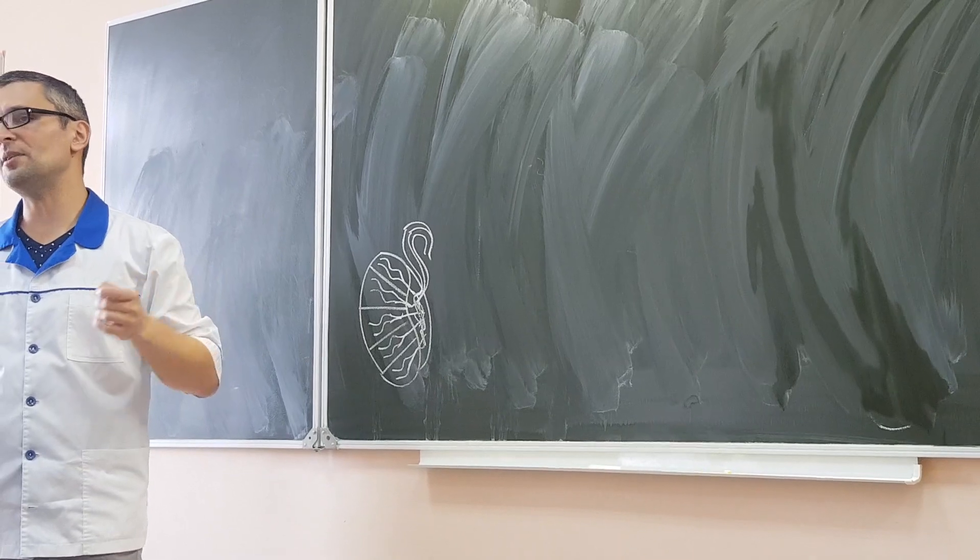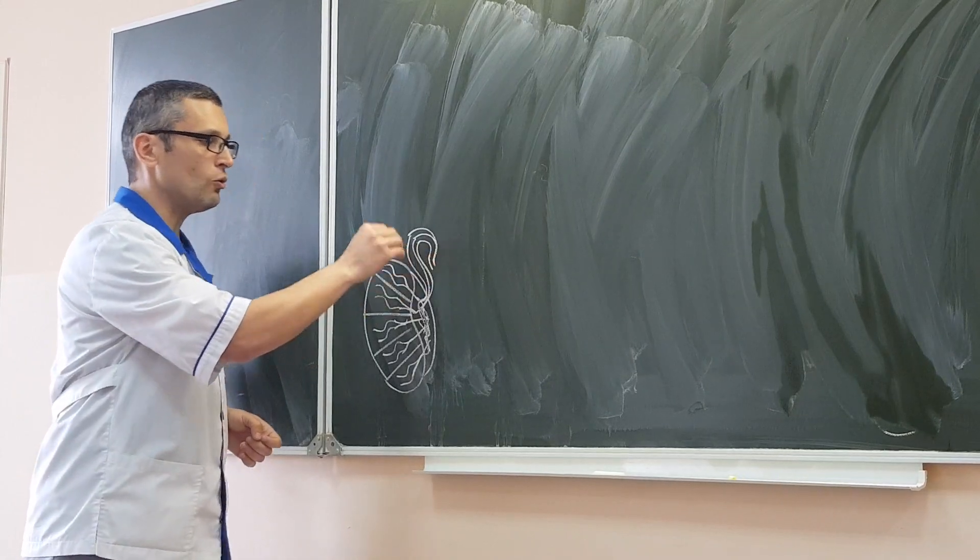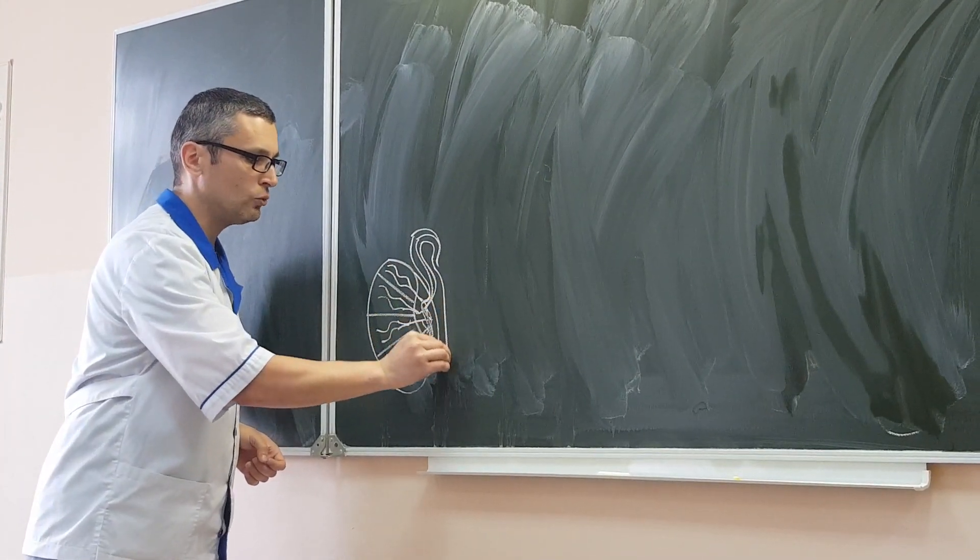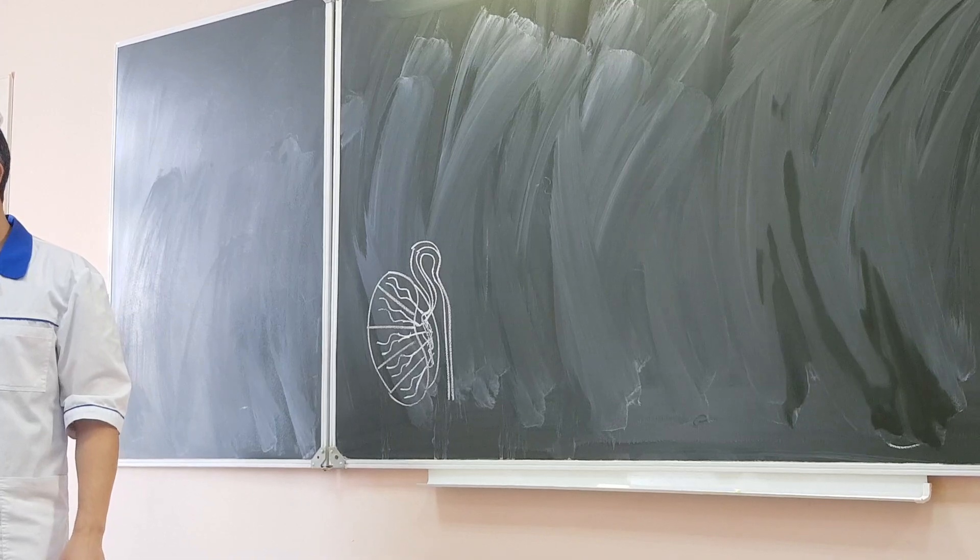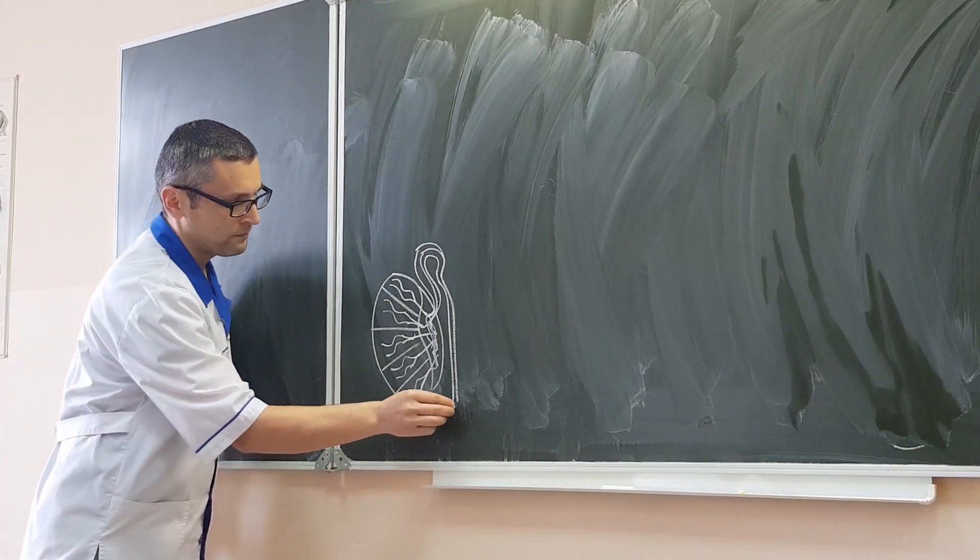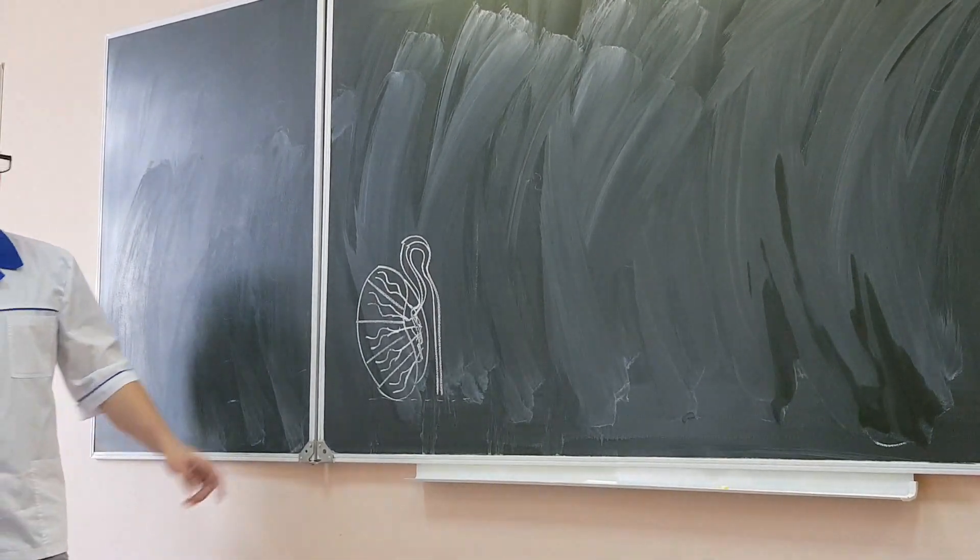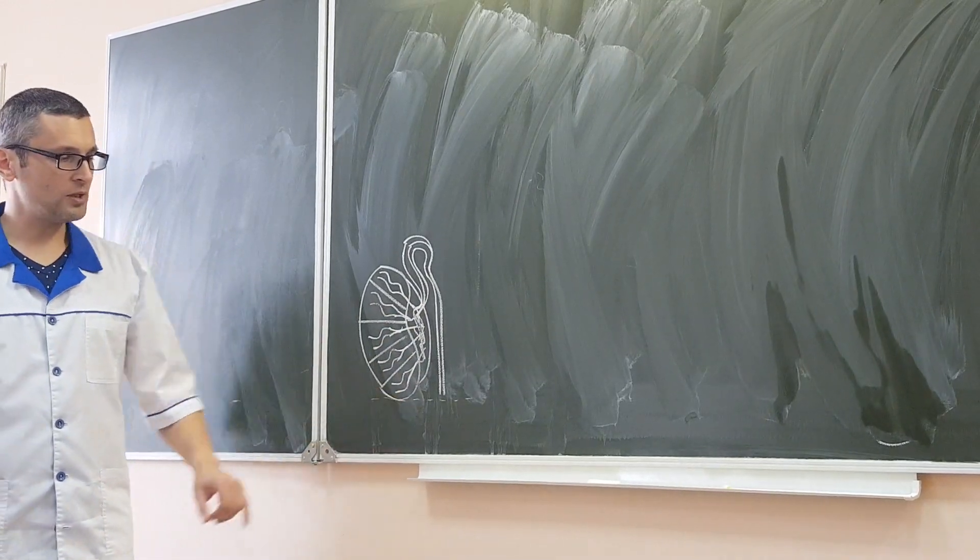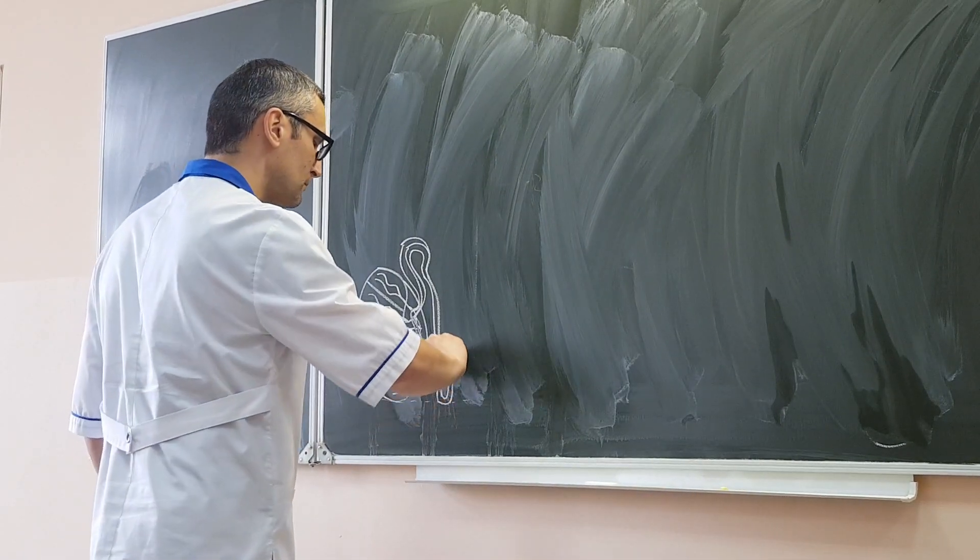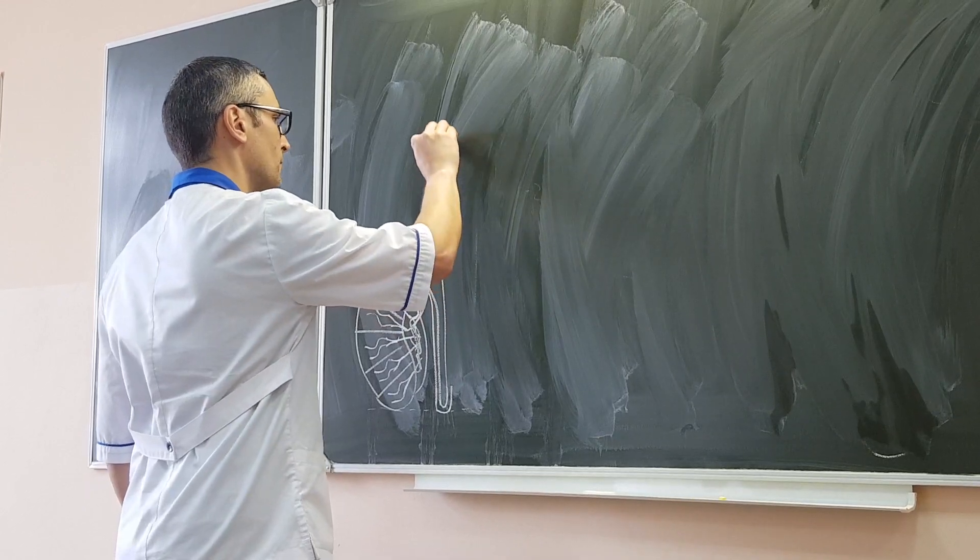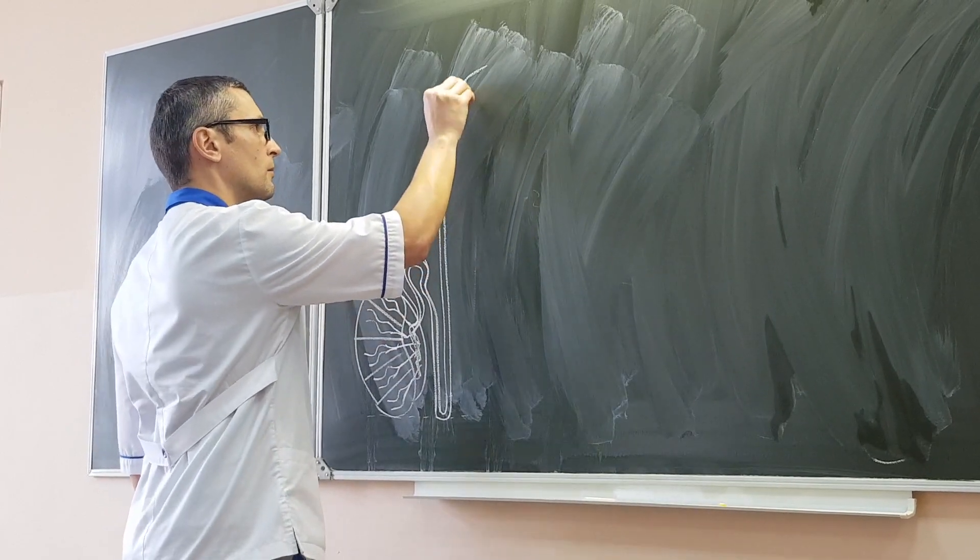They form epididymis. So epididymis consist of tubules, tubes. And after caput epididymis, all these ductuli efferentes unite together to form one ductus epididymis, which goes downward, descends, up to the level of inferior end of the testis. When ductus epididymis reaches inferior end of the testis, it turns upward and ascends.